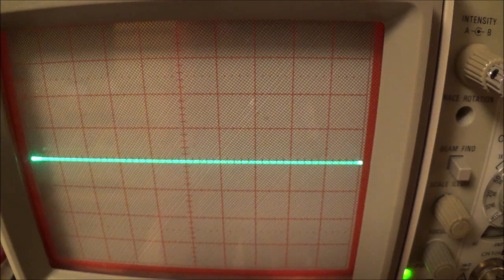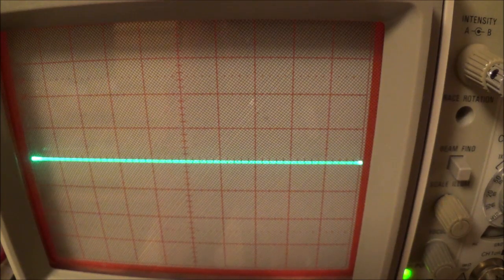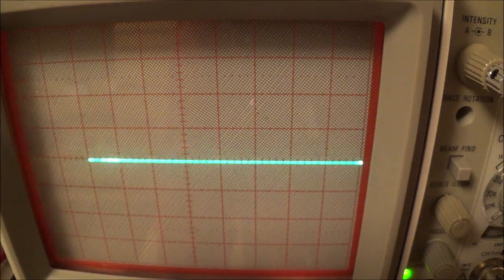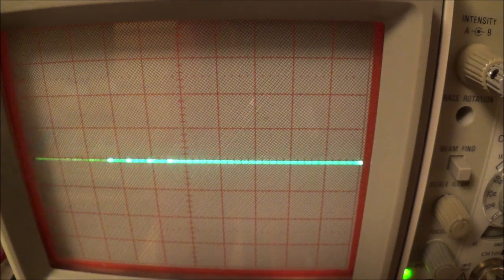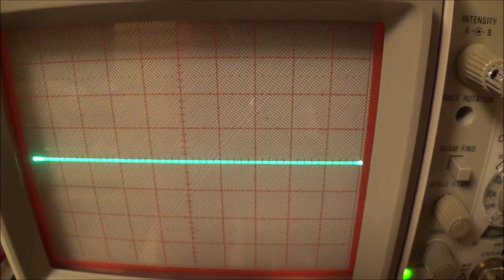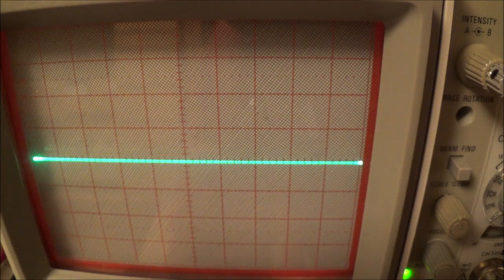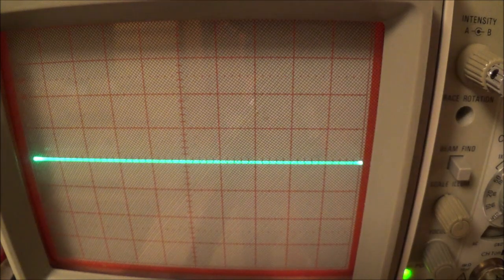Let me just go ahead and adjust this to fill these 10 gradicals here. If I move the horizontal length control, I can adjust the size. Also I switch to 20 volts sweep collector voltage.